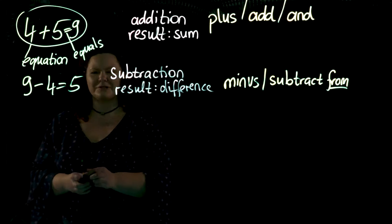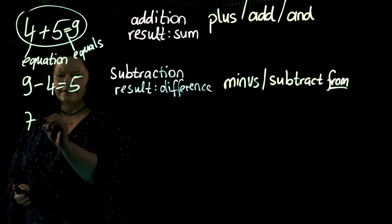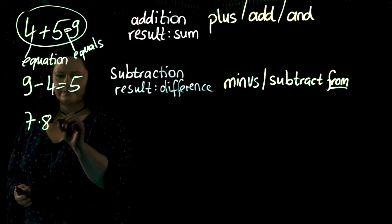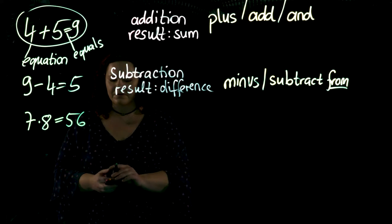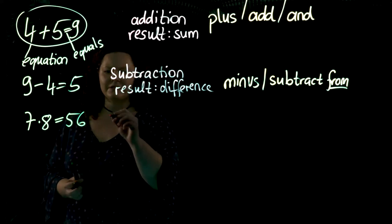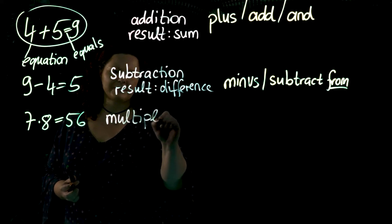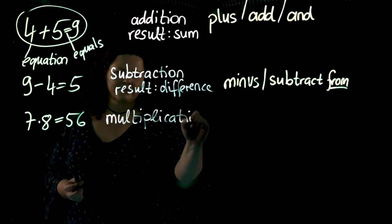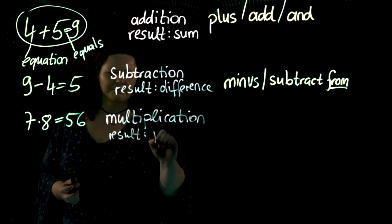What you learned afterwards was a bit more complex. For example, you learned this. How do we say that in English? First, what is this operation called? This operation is called a multiplication. The result of a multiplication is called a product.